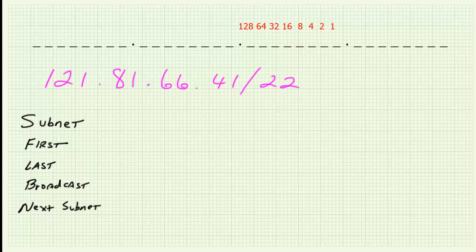We're going to take what we're given and break it down to determine the things we always look at in subnetting problems. We'll figure out what subnet ID this IP address falls within, what is the next subnet after the current one, what is the broadcast address for the current subnet, and then what is the first valid host IP address and the last valid host IP address within this subnet. The given IP address will fall somewhere between the first and last host.